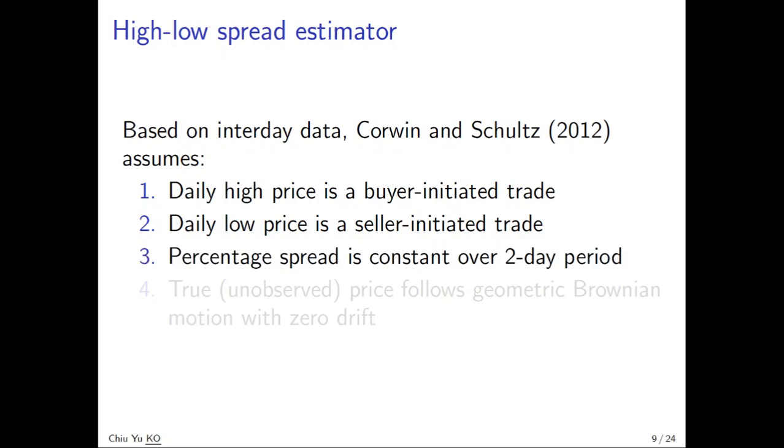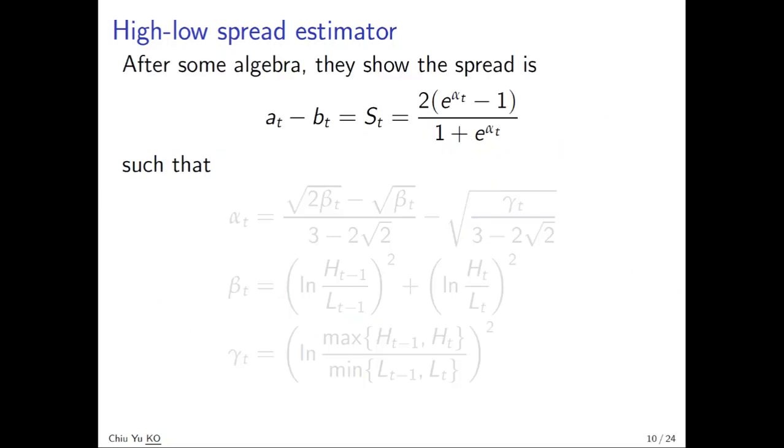The second assumption is that the percentage spread, which we defined, is constant over two days. It is possible that it changes over a day, but we have to make some assumptions because we only have daily data. And the last one is that the price follows some geometric Brownian motion with drift, so the price is more or less a random walk. This gives us the high-low spread estimator.